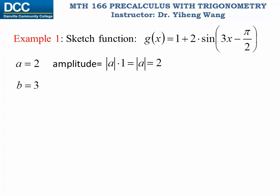Next we look at coefficient b, which is 3. This is responsible for horizontal stretching, shrinking, or reflection. It is positive, so no reflection is involved. As a general rule, the period of the new function equals 2π divided by |b|. The parent sine function has a period of 2π, so after transformation the period is 2π/3, which is smaller than 2π, indicating horizontal shrinking.